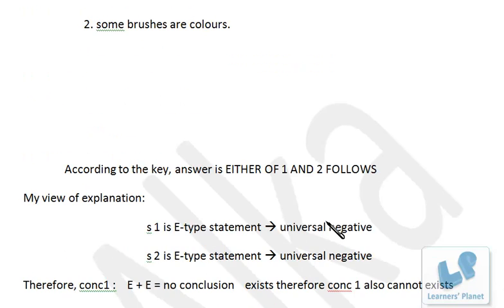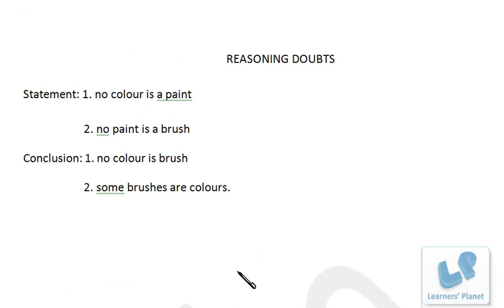Dear friend, you have sent the explanation and the answer key also. I don't understand what that S1 E-type statement universal negative and all that is. I have my own strategy to solve the problems based on syllogisms, so I do not use this E-type, Y-type, whatever.